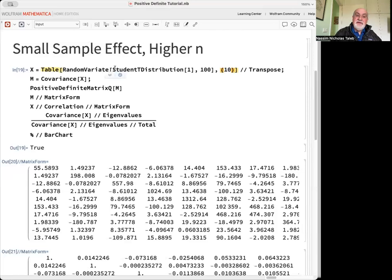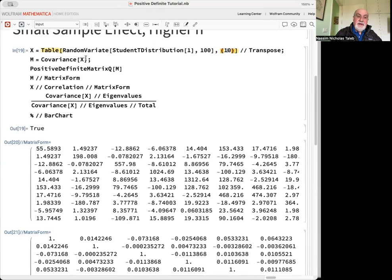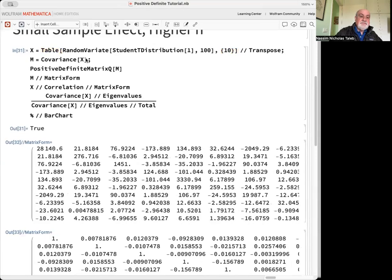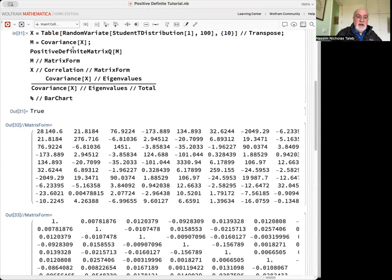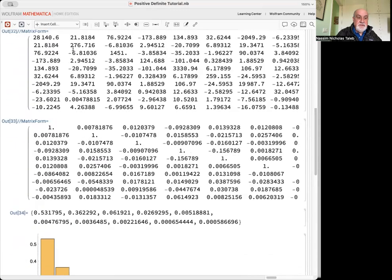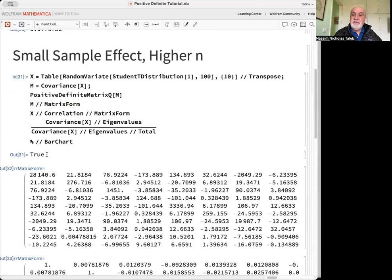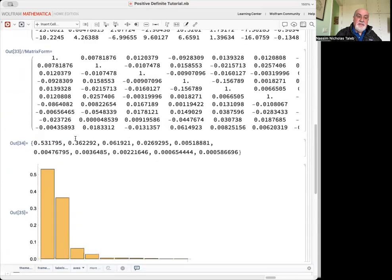I'm using a Cauchy distribution, which is effectively a Student t distribution of degrees of freedom one, and I can get a covariance matrix. I ask if it's positive definite—it's true, it is positive definite.